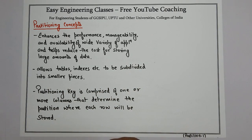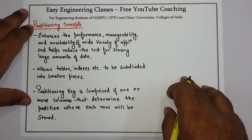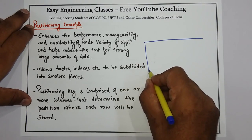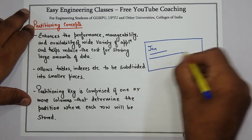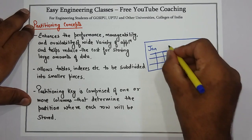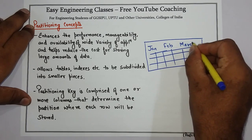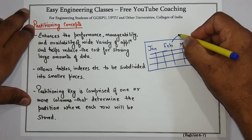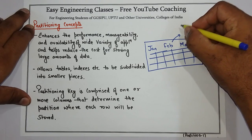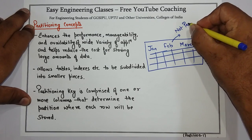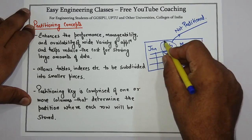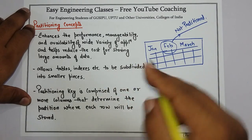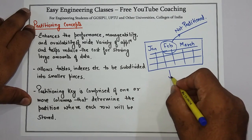For example, if we see a database which is non-partitioned, it may look like this: data for January, data for February, March, and so on. A single database contains all the records related to different months. If I need a record from only one particular month, I have to search the entire database.